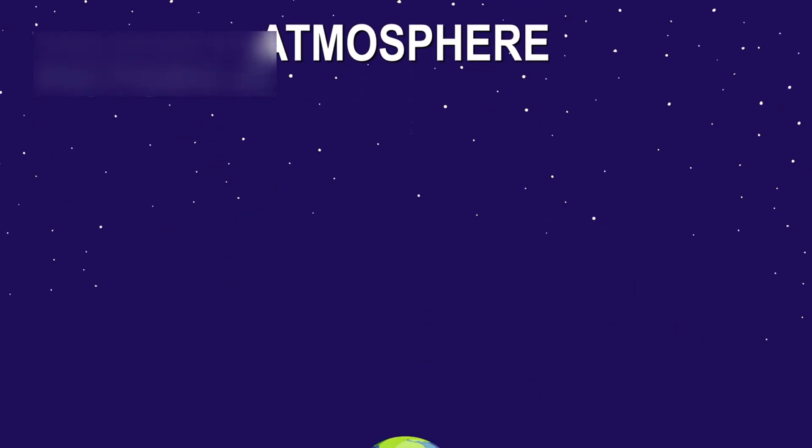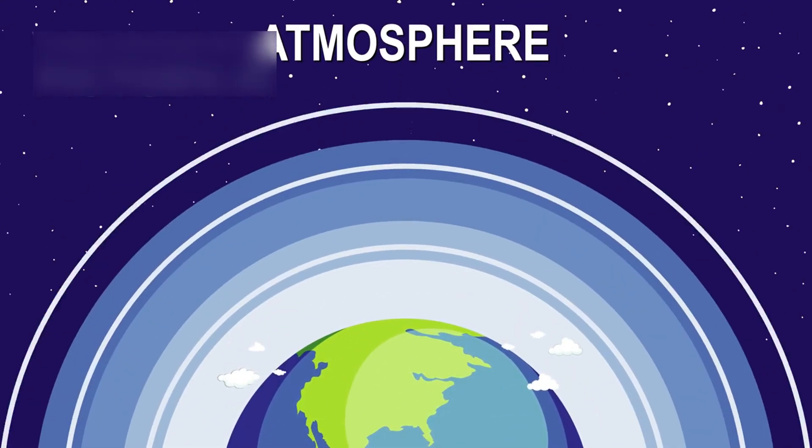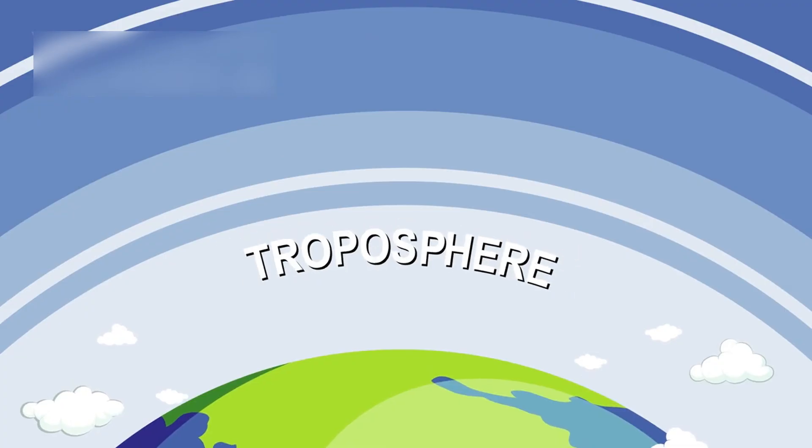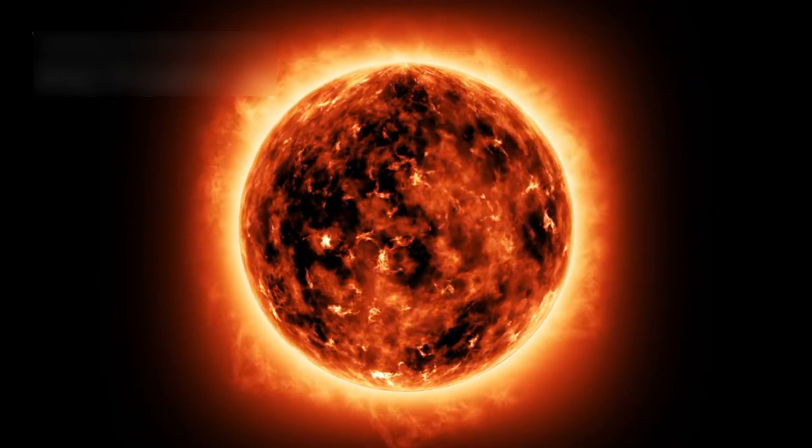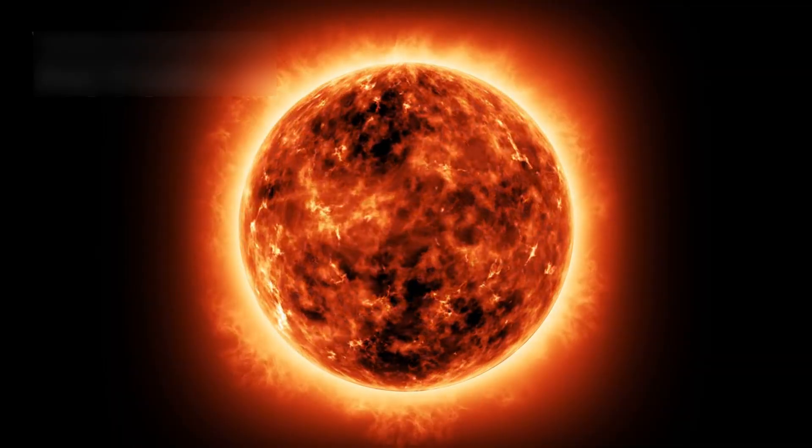For example, TRAPPIST-1e might have a thin atmosphere with carbon dioxide, hinting at air around rocky worlds. Though not proof of life, this shows planets can keep atmospheres even with harsh stellar radiation.